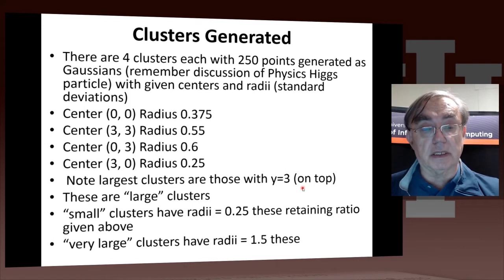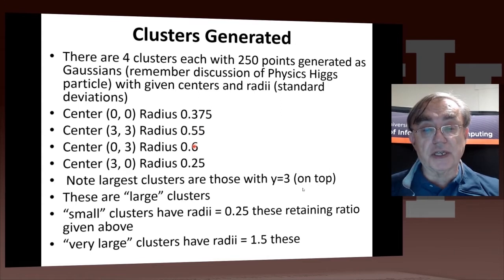The larger two of these clusters are 0.55 and 0.6. Those two are at the top at y equals 3. There is no significance in the fact that the radii are slightly different. They're just what I thought of one day when I was writing the code. We generate two other cluster sets, the so-called small clusters, which have a radius which is exactly a quarter of this. And we have the very large clusters which have radii which are 1.5 times these values here.